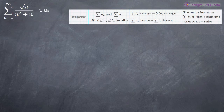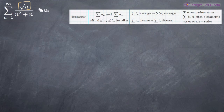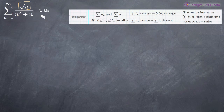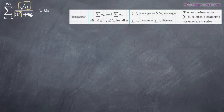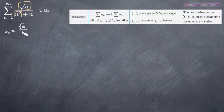We've only got one term in the numerator — the square root of n — so we're going to use that term. In the denominator we've got two terms: n squared and n. We want to take the terms that have the greatest effect on the magnitude. n squared is a bigger deal than n because no matter what number we plug in, n squared will be a larger number. So for our comparison series b sub n, we're going to say that b sub n equals the square root of n divided by n squared.